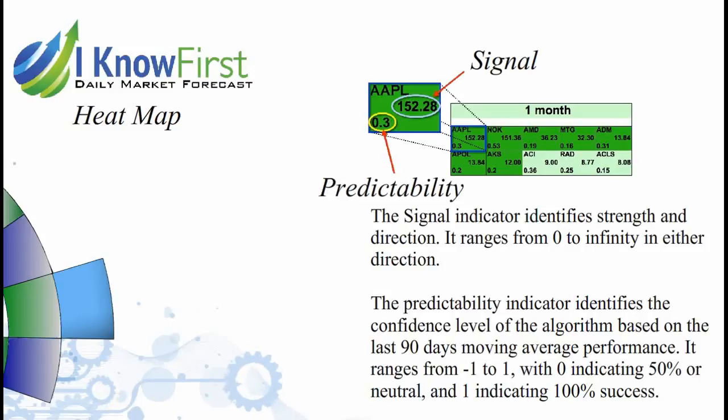The predictability indicator identifies the confidence level of the algorithm based on the last 90 days moving average performance. It ranges from negative 1 to 1, with 0 indicating 50% or neutral, and 1 indicating 100% success.